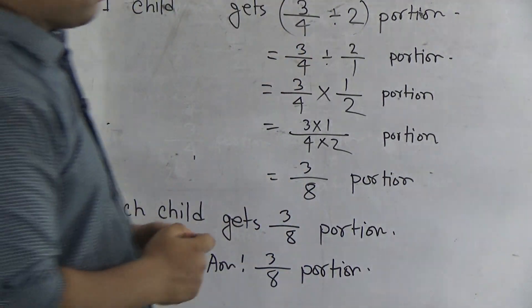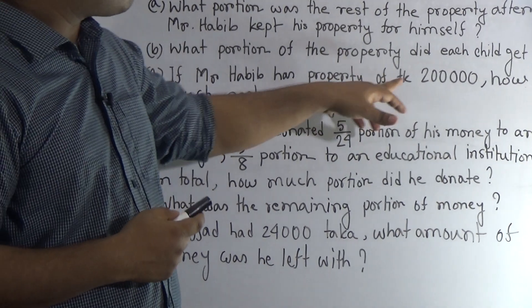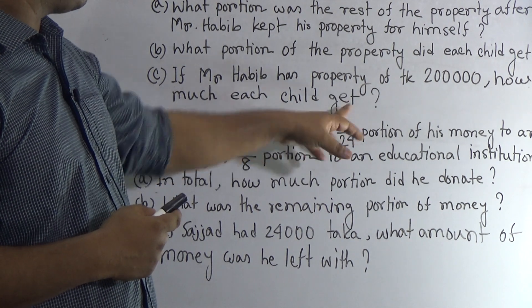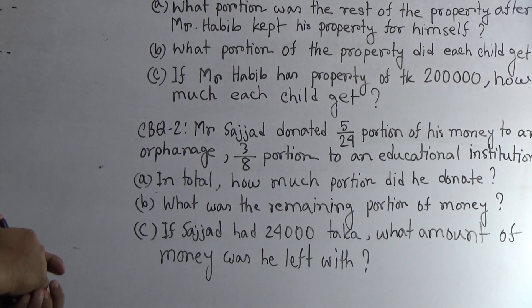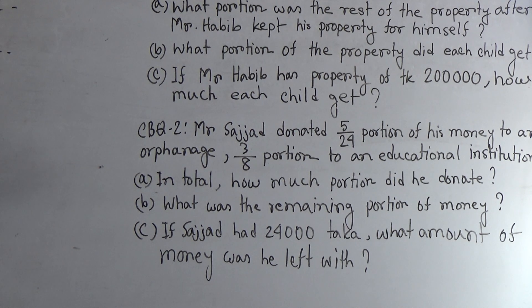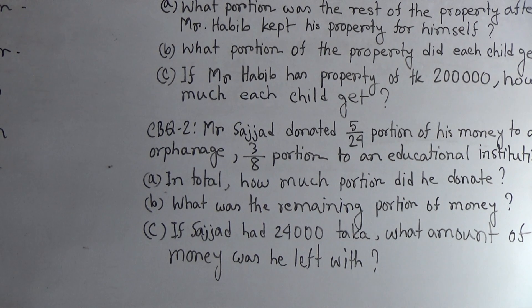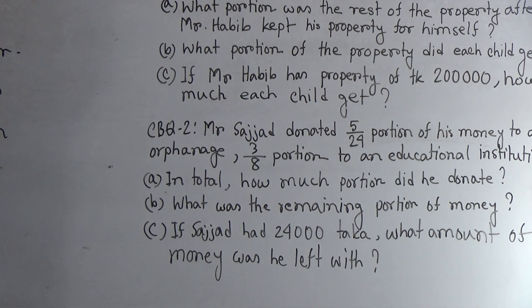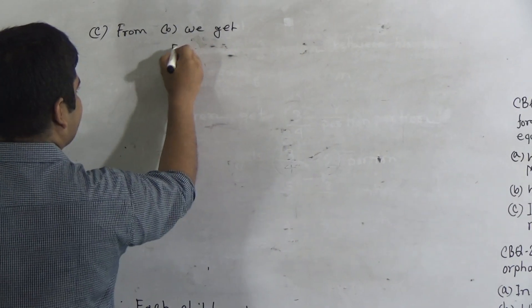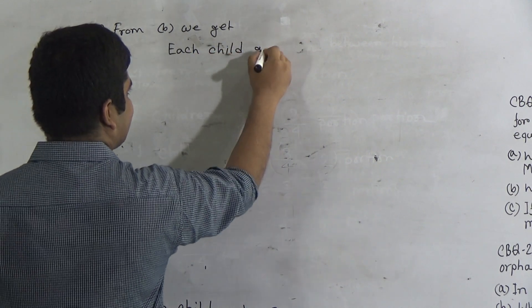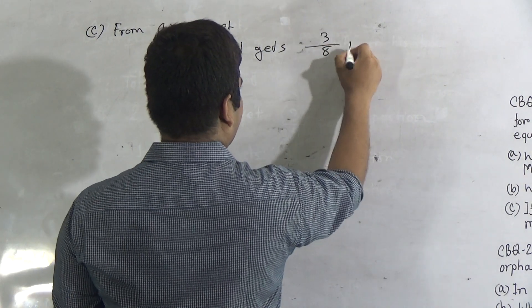Next we solve Question C. Mr. Habib has property of two lakh taka — how much does each child get? In Question A we let the total portion be one. The price of one portion of property is two lakh. Each child gets three by eight portion. So we need to find the price of three by eight portion. From B we get: each child gets three by eight portion.